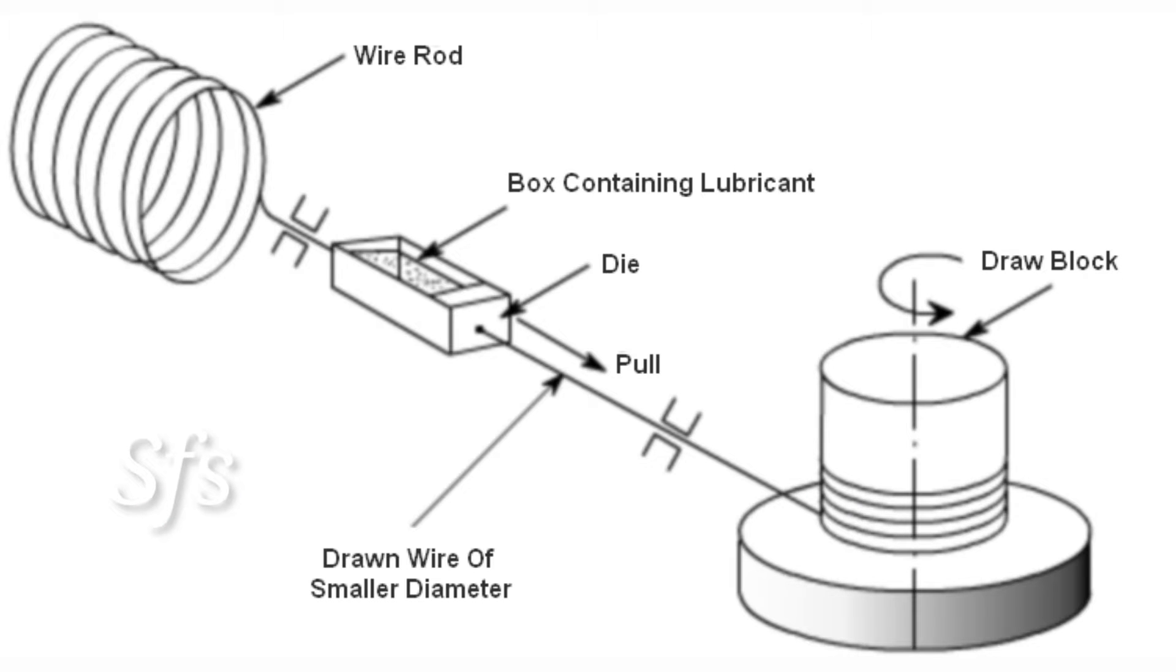Now let us understand the process of wire drawing. You can look here at the top of the screen. There is a wire rod. This wire rod has a larger cross-section area, and we have to reduce the cross-section area of this wire.